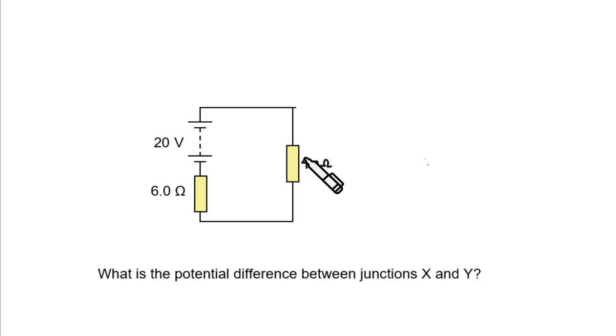Finally, we now have 20 volts divided between the 4 ohm and the 6 ohm. So by the potential divider principle, this guy here is going to grab 4 out of 10 of 20 volts. So that's 8 volts between these two points.